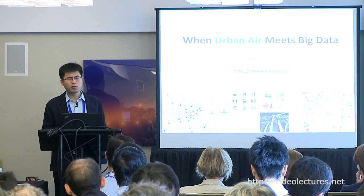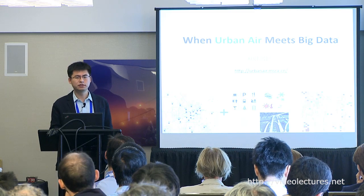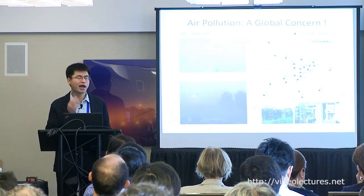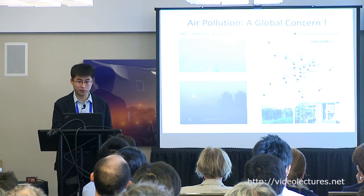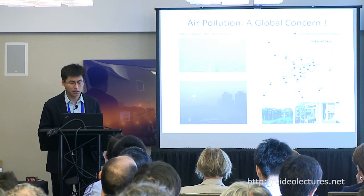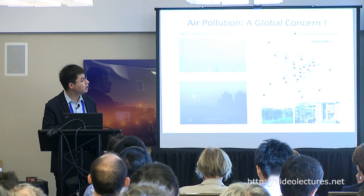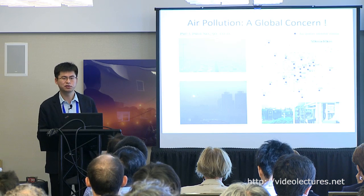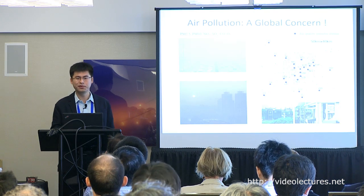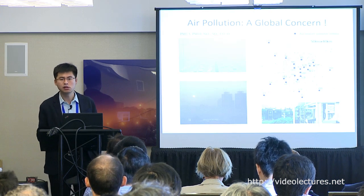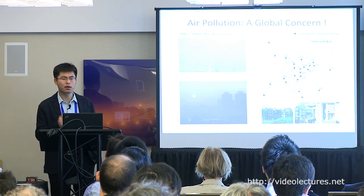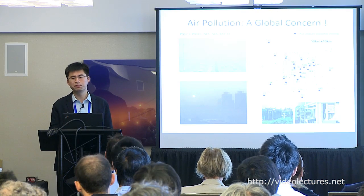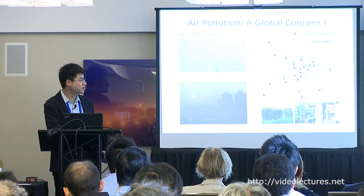The third example tackles urban air quality pollution, which is a major problem in China and developing countries. The government has built many air quality monitoring stations that report ambient air quality every hour. Each station is represented as a dot on the map, but such stations are very large and expensive — we cannot build them everywhere.